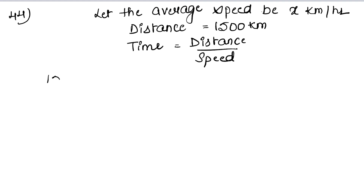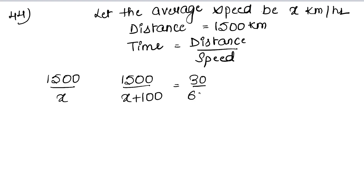The distance to cover is 1500 km. The plane was 30 minutes late, so we convert 30 minutes to hours as 30/60. At the original speed x, time is 1500/x. When the speed was increased by 100 km per hour, the time is 1500/(x+100). The difference in times equals 30/60, so we write 1500/x minus 1500/(x+100) equals 1/2.